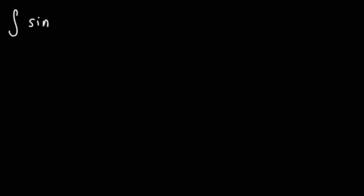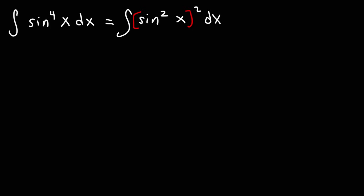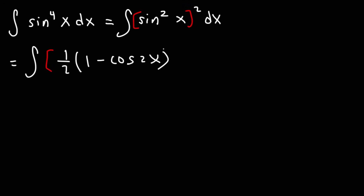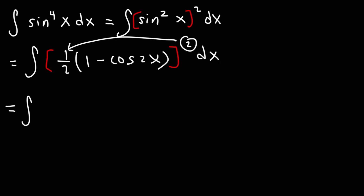For the next problem we're finding the indefinite integral of sine to the fourth x dx. We write this as (sine squared x) squared, since sine squared raised to the 2nd power equals sine to the fourth. We apply the power reducing formula on sine squared: it becomes 1/2 times (1 minus cosine 2x), all raised to the 2nd power. We distribute the exponent: 1/2 squared is 1/4, so we have 1/4 times (1 minus cosine 2x) squared, which we need to FOIL.